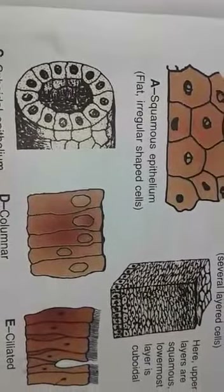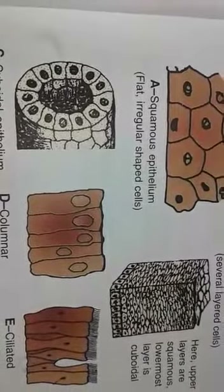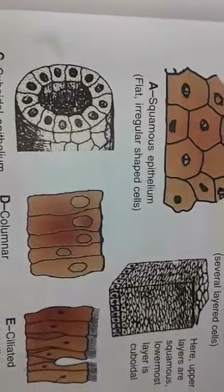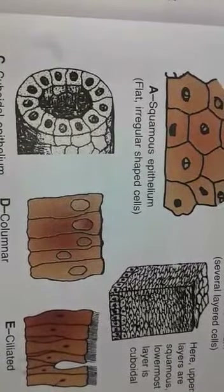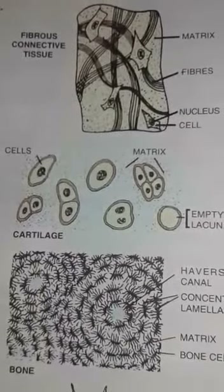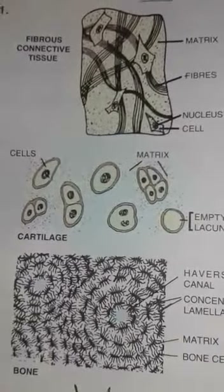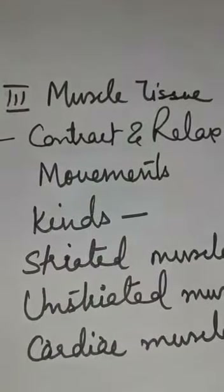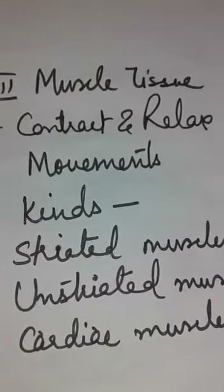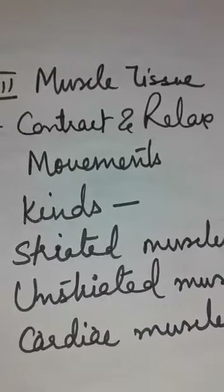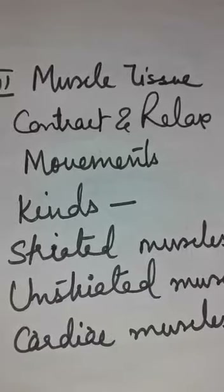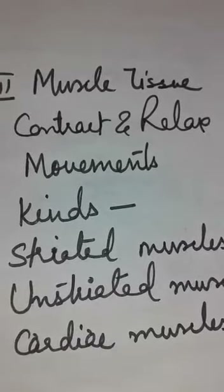Good morning everyone. In the previous lecture I explained different kinds of epithelial cells and various kinds of connective tissue. Today I'm going to explain muscle tissue. We know that muscle tissue can contract as well as relax.